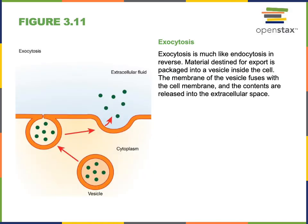Exocytosis is an active transport mechanism where a vesicle fuses with the plasma membrane, and as that vesicle fuses, the contents of the vesicle spill out of the cell into the extracellular space.